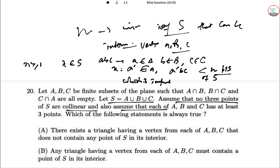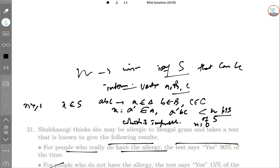Listen to this part properly again. If A'BC has less than N points of S in its interior, which is impossible, so N = 0. There exists a triangle having a vertex from A, B, C that does not contain any point of S in its interior. Answer is A.